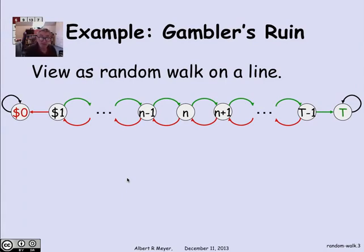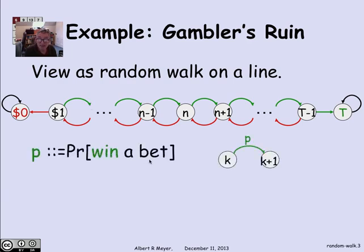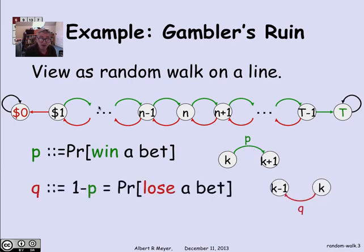Gambler's Ruin can be seen as an example of this kind of random walk. The states were the amount of money that you had ranging from 0 when you're bankrupt to T when you've reached your target. And N is the start state, which is your initial stake. The green edges are weighted with the probability P of winning a bet, so we have transitions from K to K plus 1 for K less than T with weight probability P. And likewise, the red edges are weighted with the probability of losing a bet Q or 1 minus P. So there is a digraph or state machine that describes the Gambler's Ruin problem as a probabilistic walk on a graph.